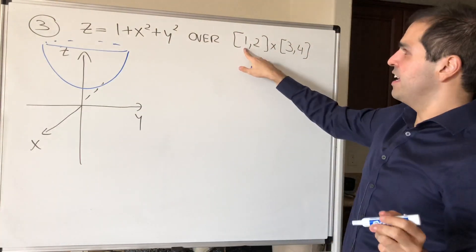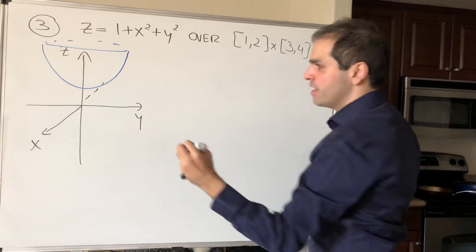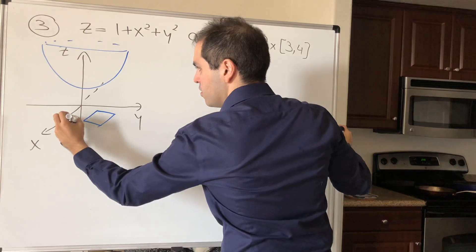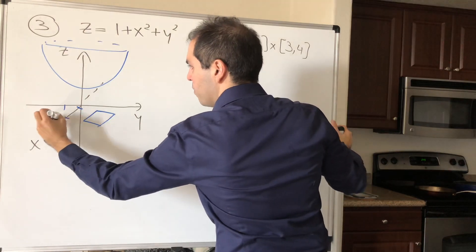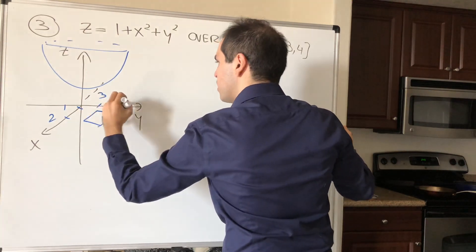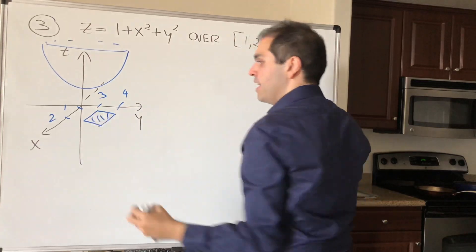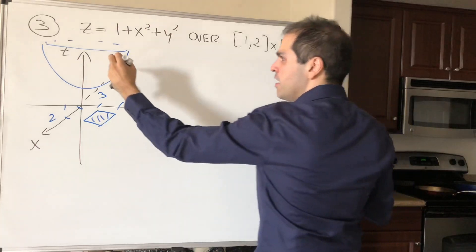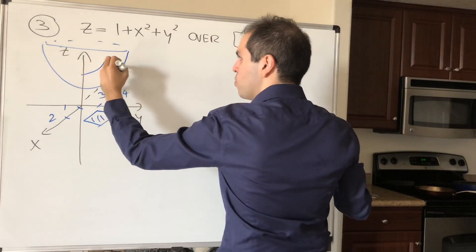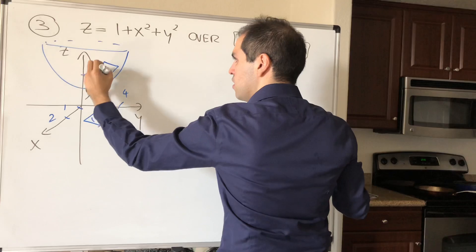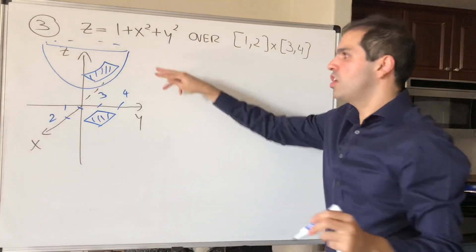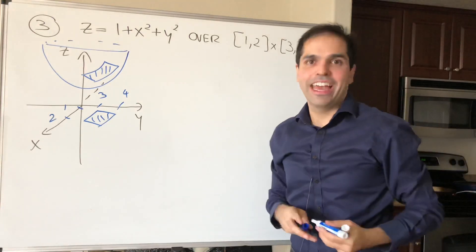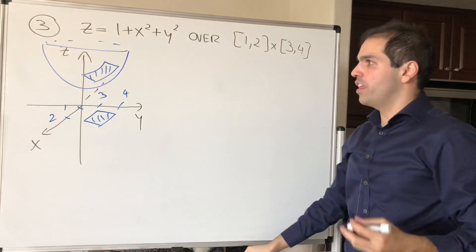But what we're saying is, we're just looking at it under this little square. So you see, this is 1, 2, and this is 3, 4. So kind of the base, or the shadow of your surface, is this little square, and we're really just looking at this portion here. So we're just cutting up a little patch out of this parabola cake, if you wish.